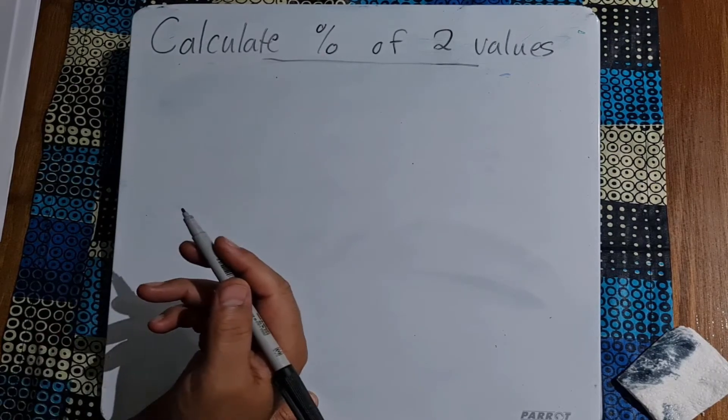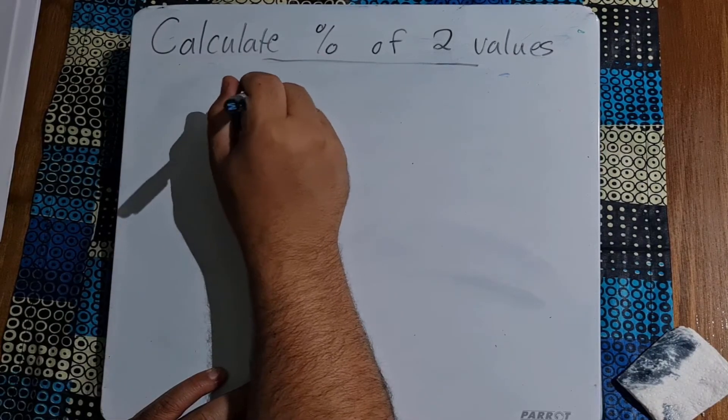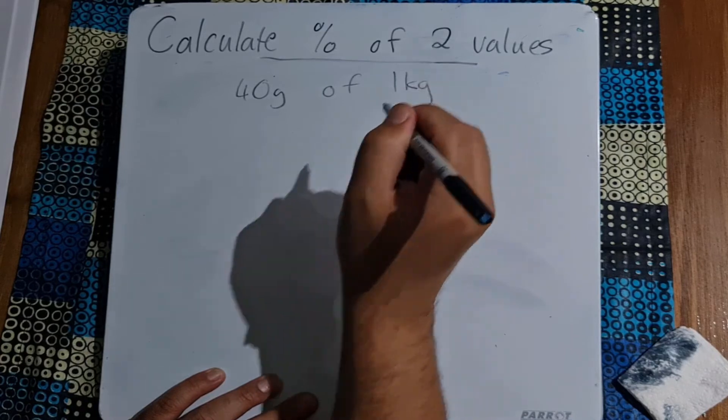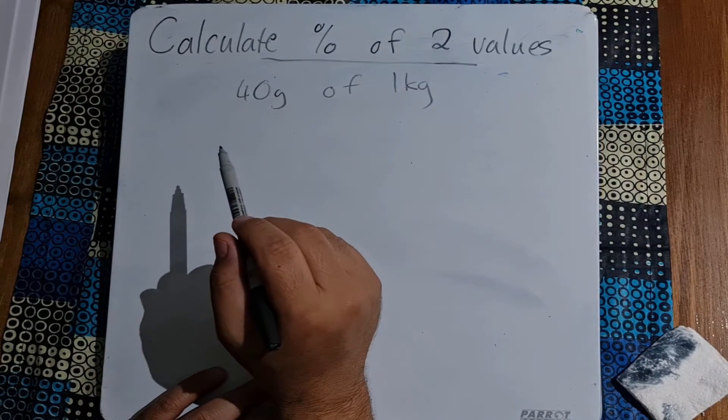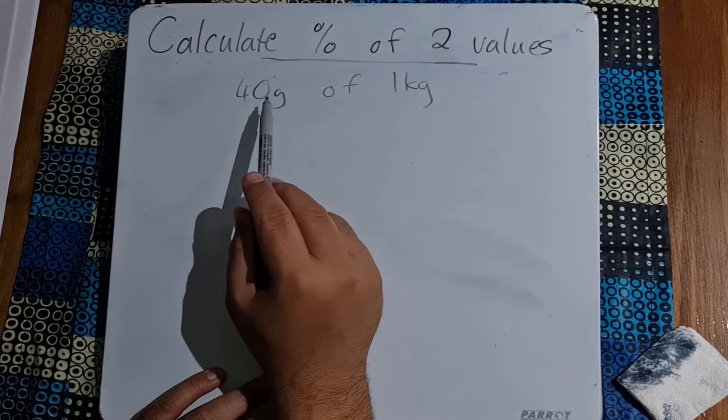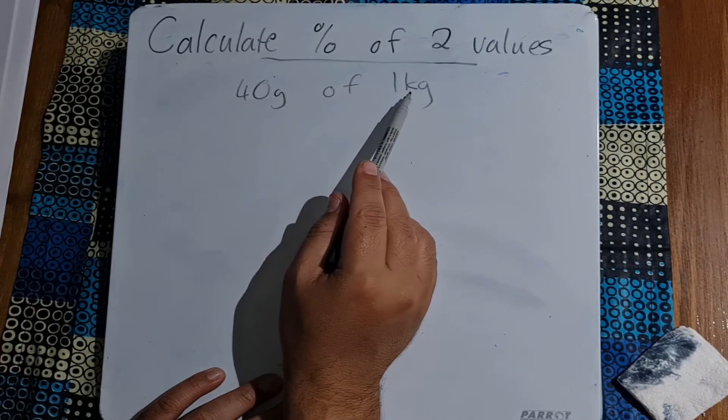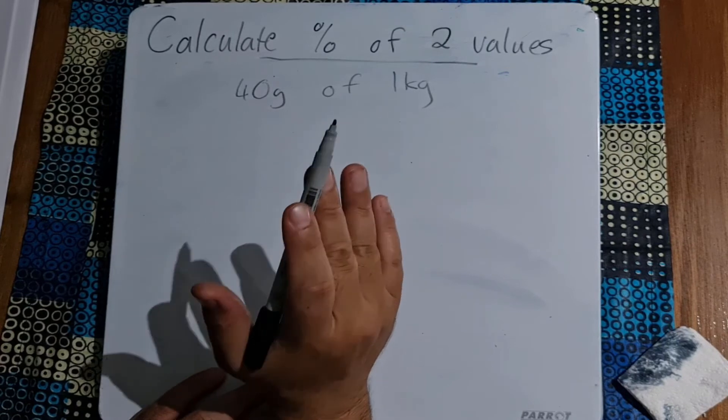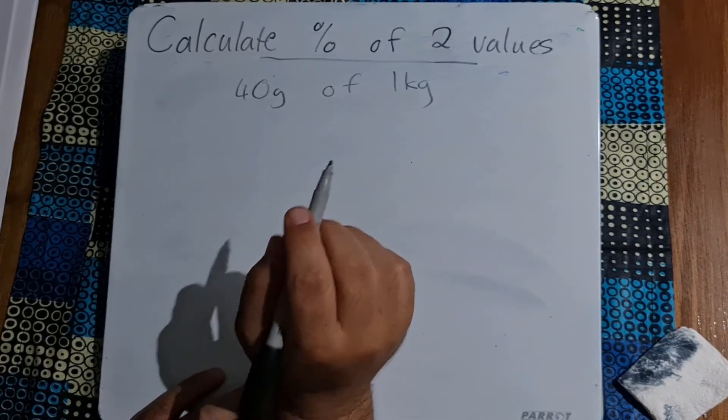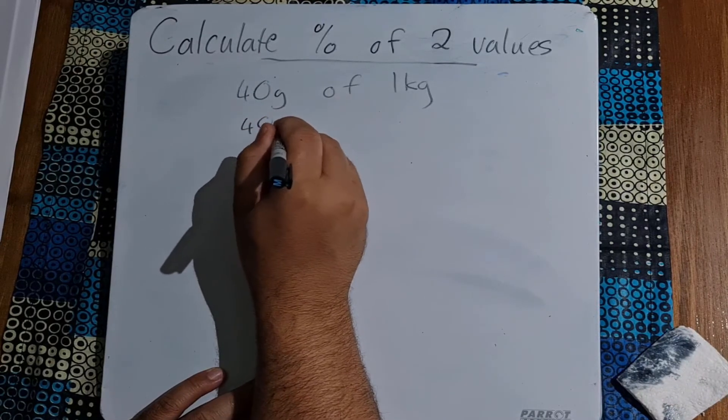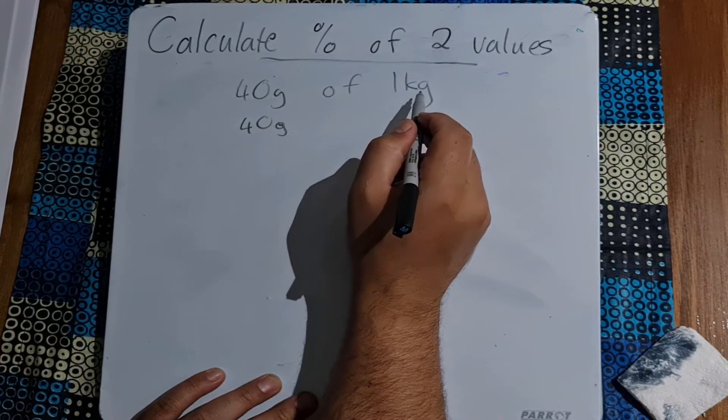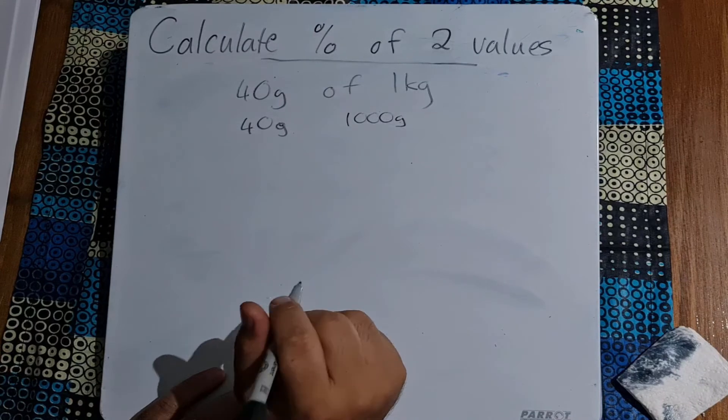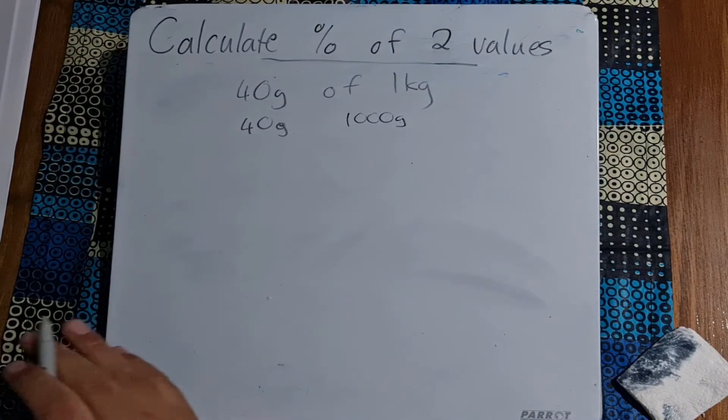With grade 11s they can give you a scenario like this and ask, what percentage is 40 grams of one kilogram? We've seen this when calculating the percentage of one value, but the difference here now is that you've got two different forms of measurement. These are grams and these are kilograms. The first thing you need to do is get the two into the same unit of measurement, so we'll go 40 grams and we're going to convert our one kilogram into grams, which is going to be 1000 grams.